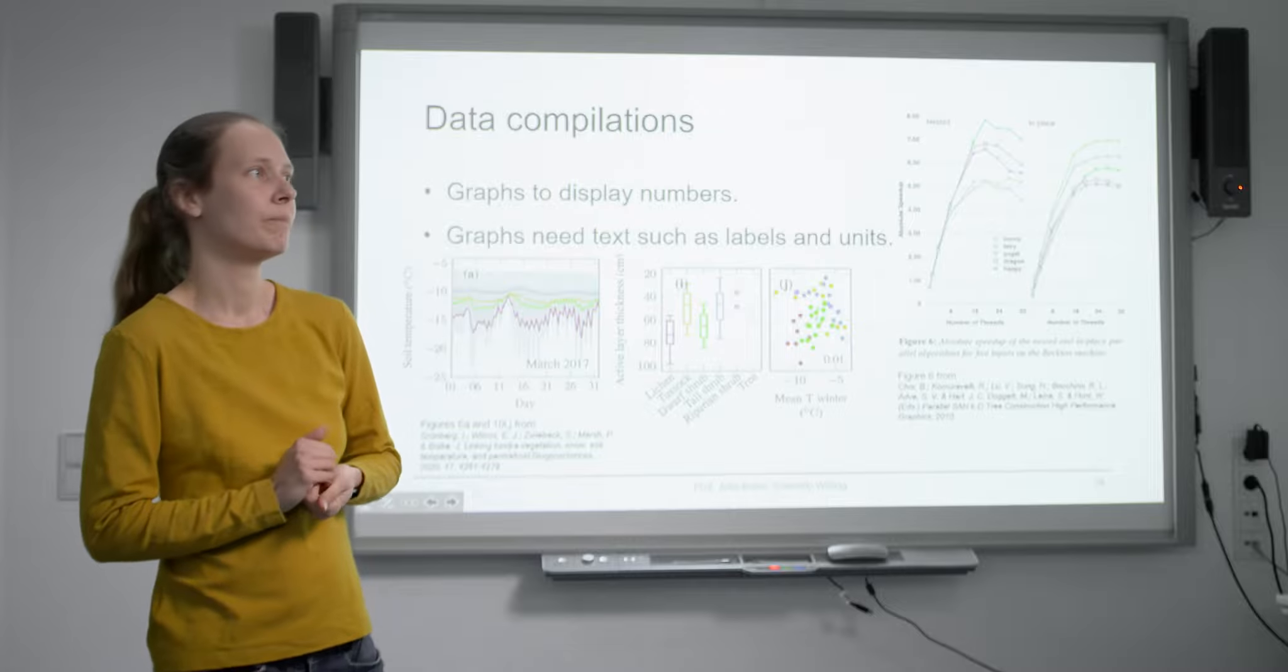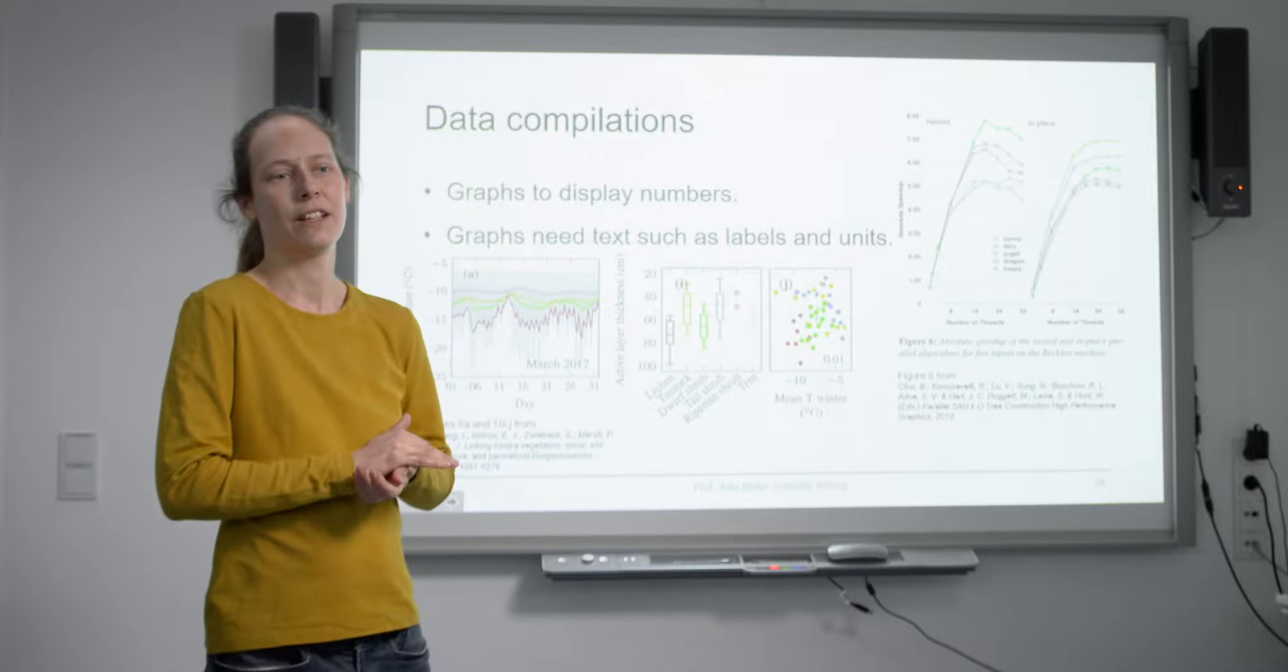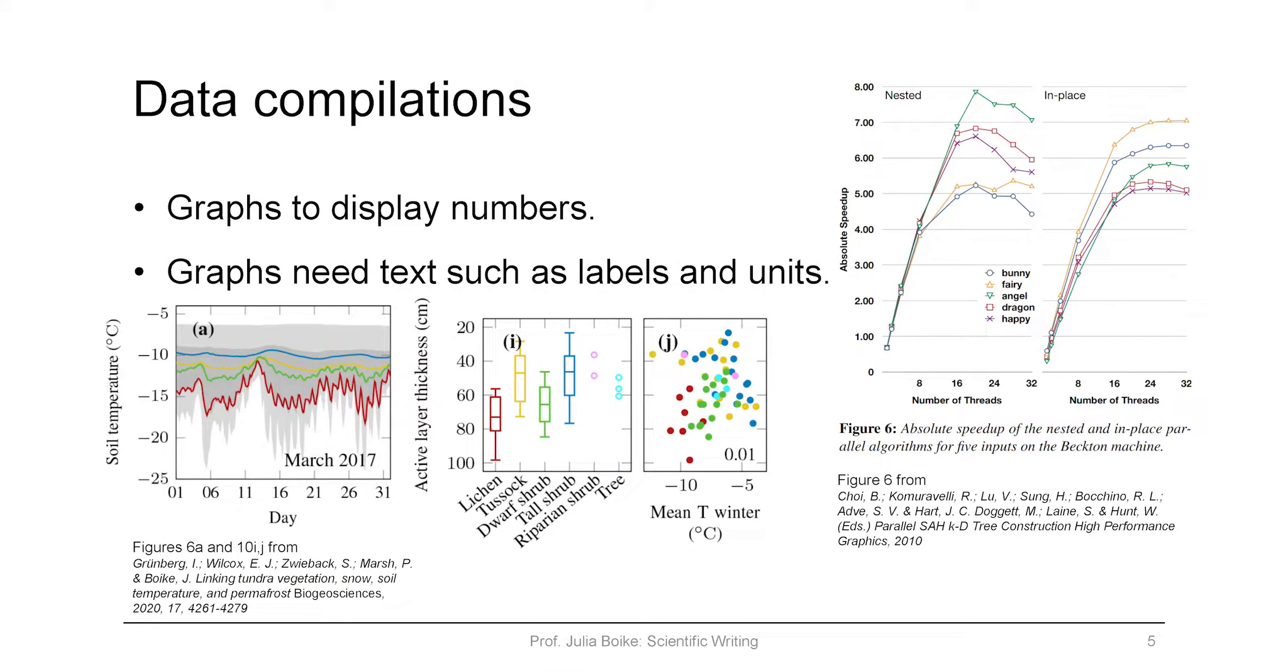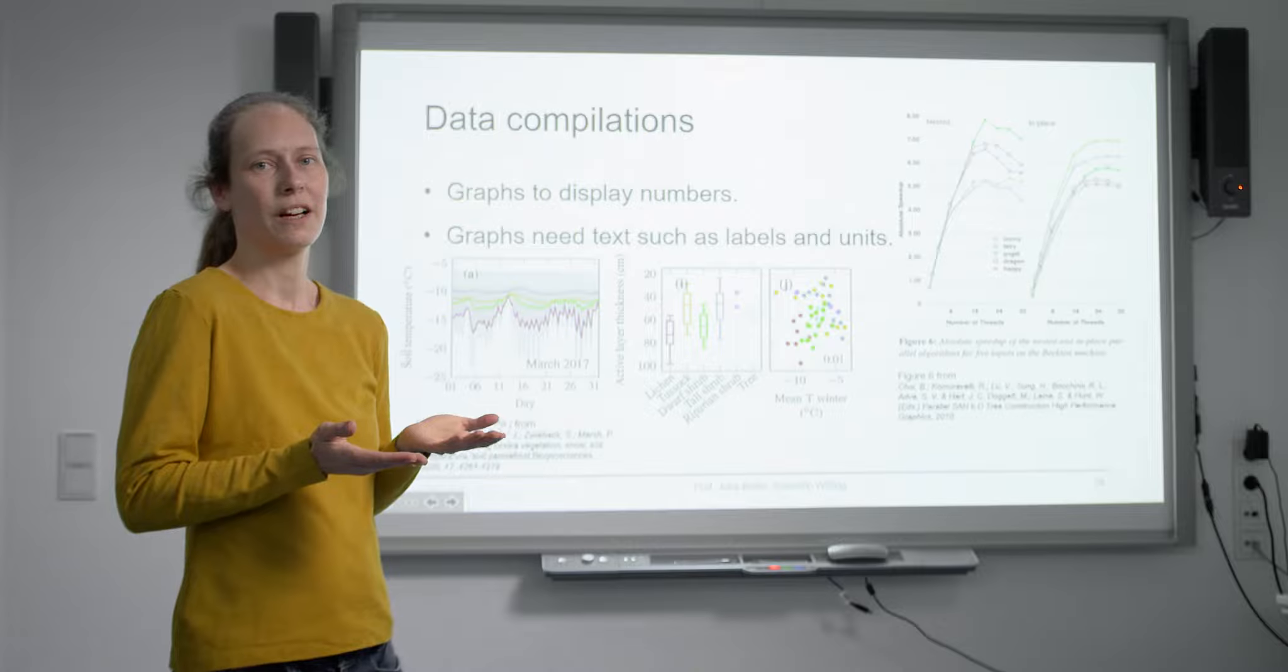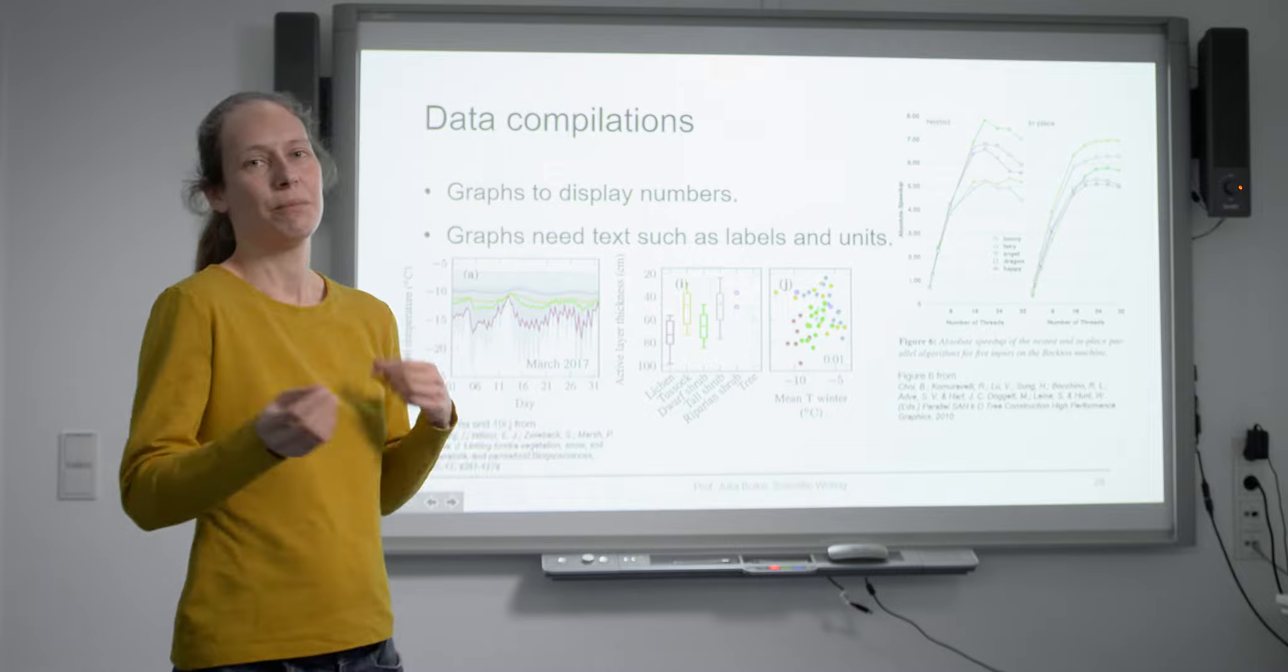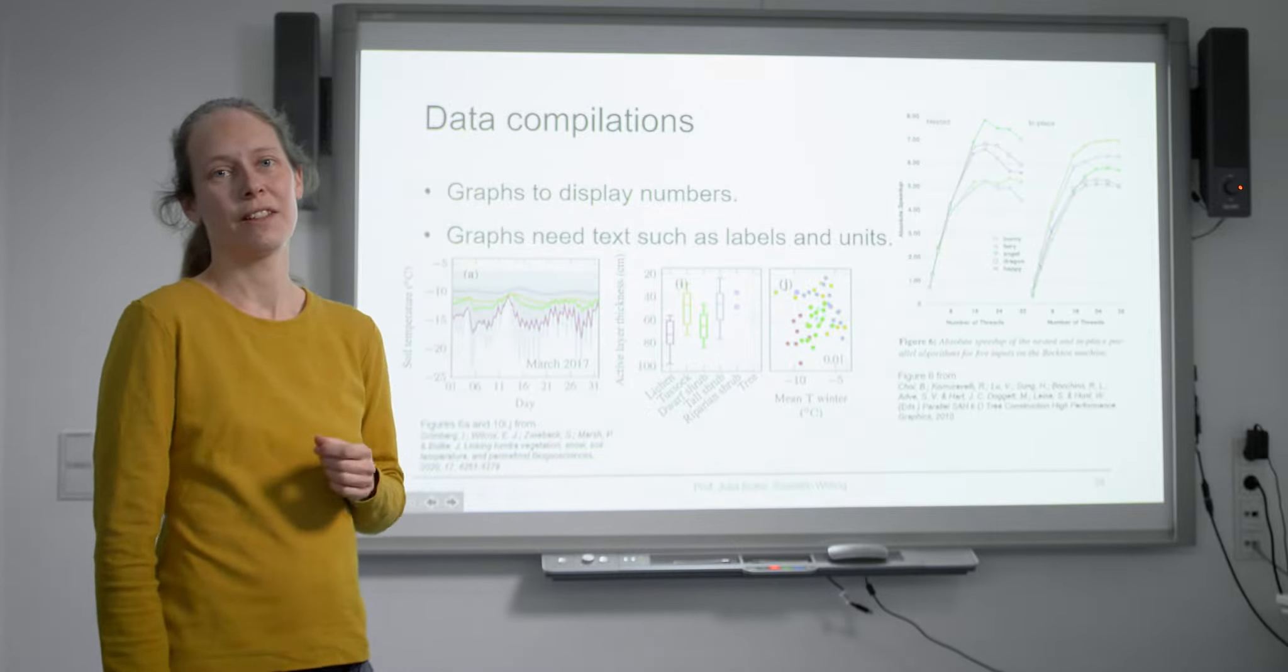With that I'd like to come to the data compilations. This is everything showing numerical data and what you always need with showing numerical data is additional information, especially axes. So what are you showing on X and Y axes? But also you quite often need a legend, for example here if you have different lines. Sometimes if it's really just two lines you could mention that in the caption, like the solid line means this, the dashed line means this, but as soon as you have more, a little legend is always good.